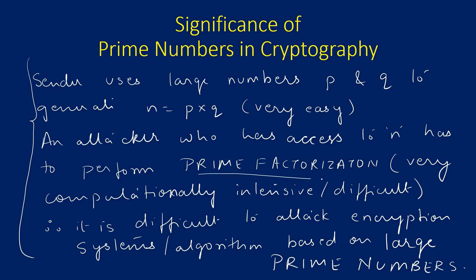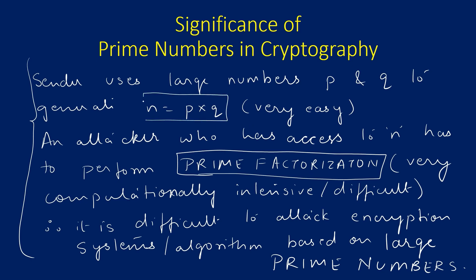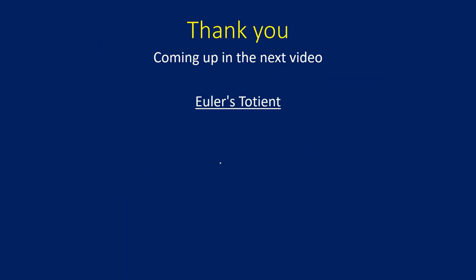So overall, the sender uses large prime numbers P and Q to generate N by multiplying them, which is computationally easy. An attacker who has access to N has to perform prime factorization, which is computationally very intensive and difficult, and therefore it is difficult to attack encryption systems based on large prime numbers. This is why knowledge of prime numbers and prime factorization is so important. I hope all of you understood the concepts clearly. In the next video, I shall be teaching you the concept of Euler's Totient, which is another important concept used in public encryption algorithms. Thank you guys — stay healthy, stay happy, stay blessed, and see you all in my next video.